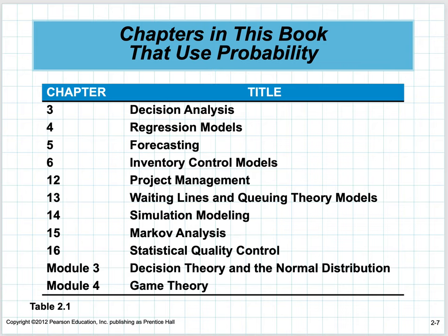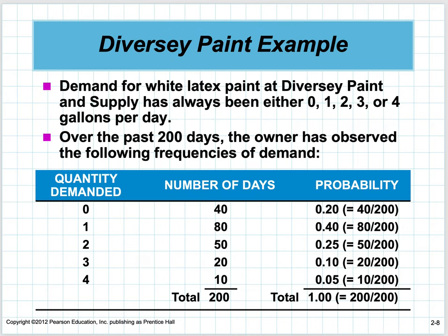Here are the chapters in the book where probability is important. We talk about it in decision analysis next week, and in forecasting and regression models a few weeks after that, and inventory control models after that. We could cover more chapters — decision theory, normal distribution, or game theory — but we're not doing any of those.